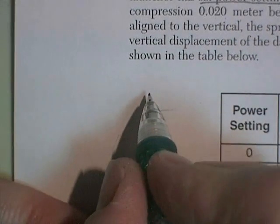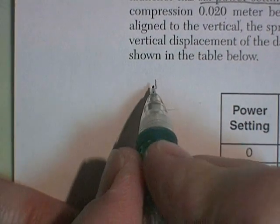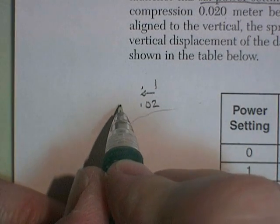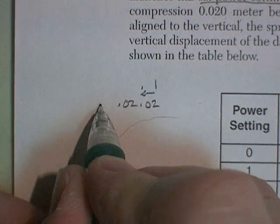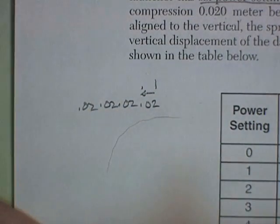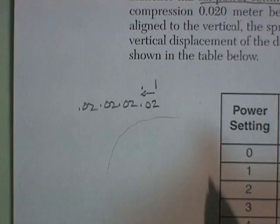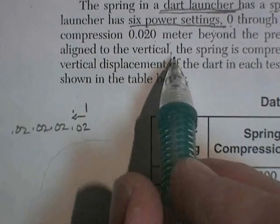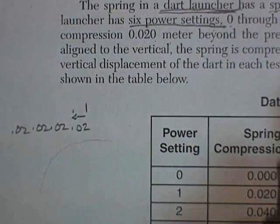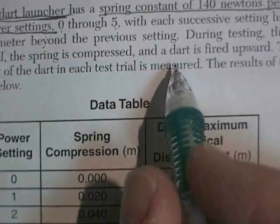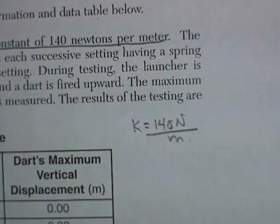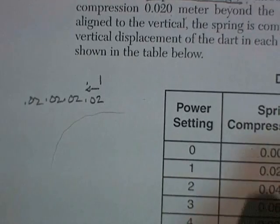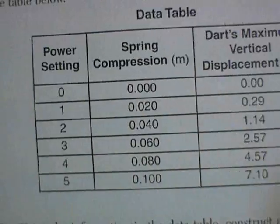With each successive setting, the spring has a compression of 0.02 meters beyond the previous setting. So you pull it back. And I guess that's why you need zero. You have to start off. Then you go back a compression of 0.02 meters. And then 0.02 more. And then 0.02 more. And then 0.02 more. And so on. During testing, the launcher is aligned to the vertical. So you're shooting it straight up. The spring is compressed and the dart is fired upwards. The maximum vertical displacement of the dart in each test is measured. The results are shown on the table. So here we go.